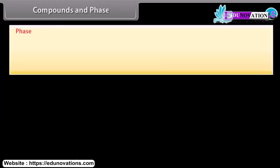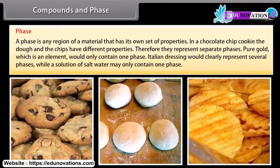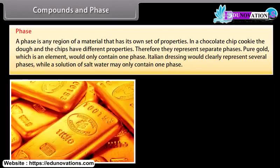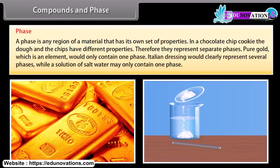A phase is any region of a material that has its own set of properties. In a chocolate chip cookie, the dough and the chips have different properties; therefore, they represent separate phases. Pure gold, which is an element, would only contain one phase. Italian dressing would clearly represent several phases, while a solution of salt water may only contain one phase.